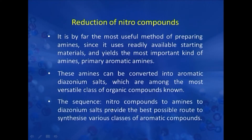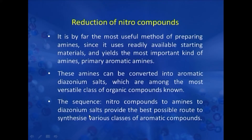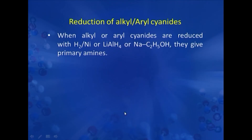The sequence for the preparation of different classes of organic compounds is: first, aromatic hydrocarbons are nitrated to form nitro compounds; nitro compounds upon reduction form amines; these are then converted to diazonium chloride; and diazonium salts are converted into various classes of aromatic compounds, which we will discuss in forthcoming episodes.